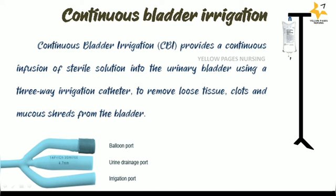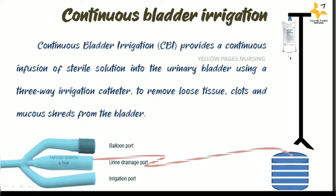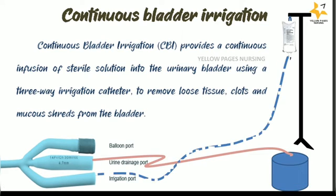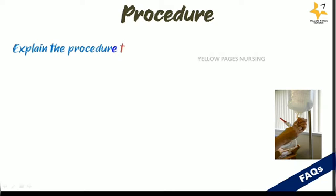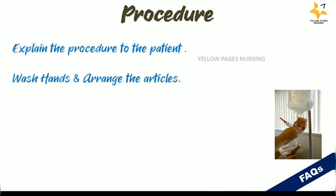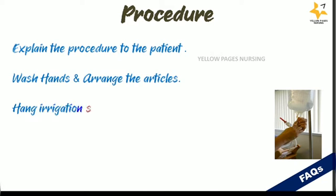Continuous bladder irrigation provides a continuous infusion of sterile solution into the urinary bladder using a three-way irrigation catheter, to remove loose tissues, clots, and mucous shreds from the bladder. The three ports of the catheter are: balloon port, urine drainage port, and irrigation port.